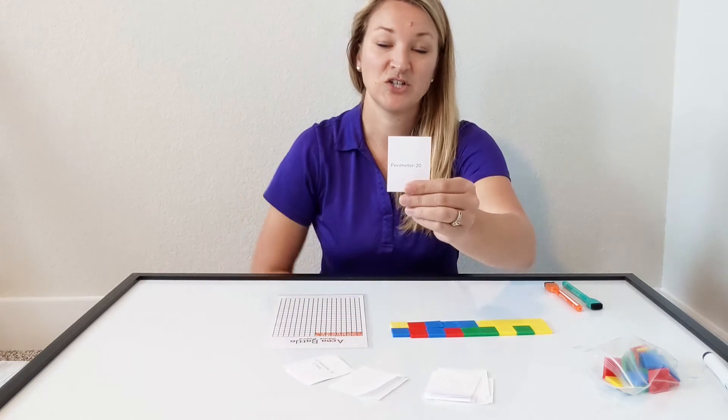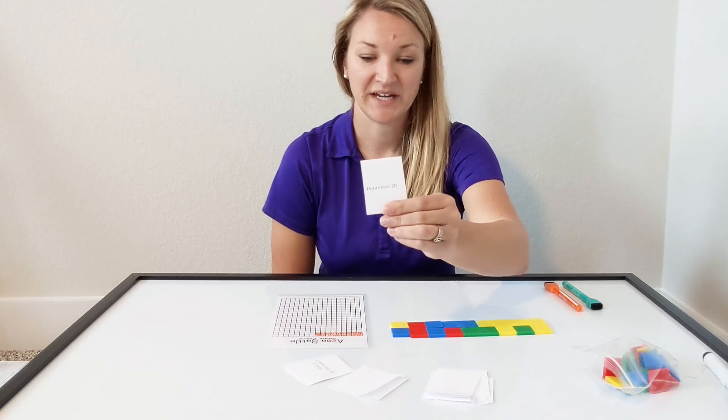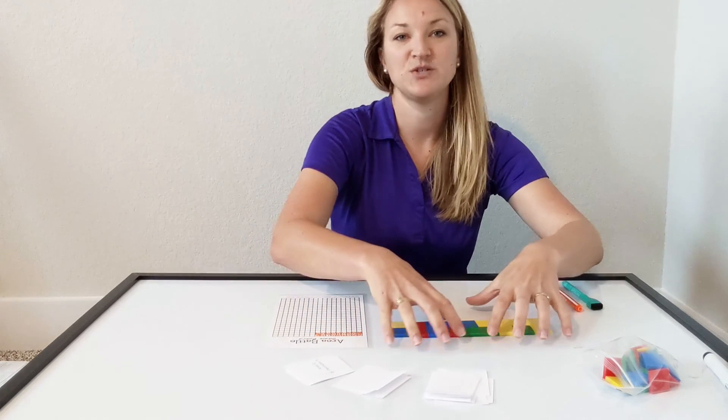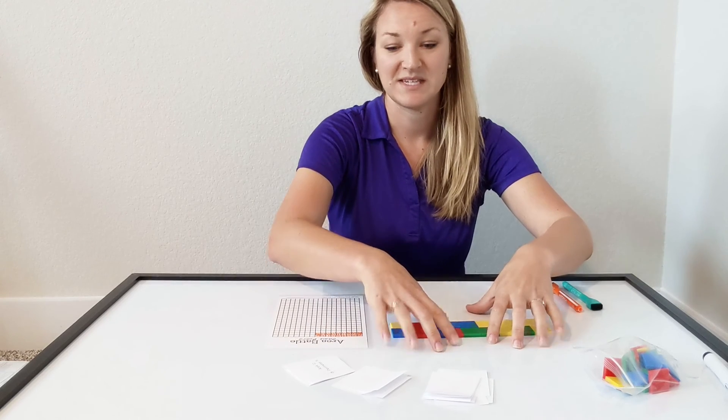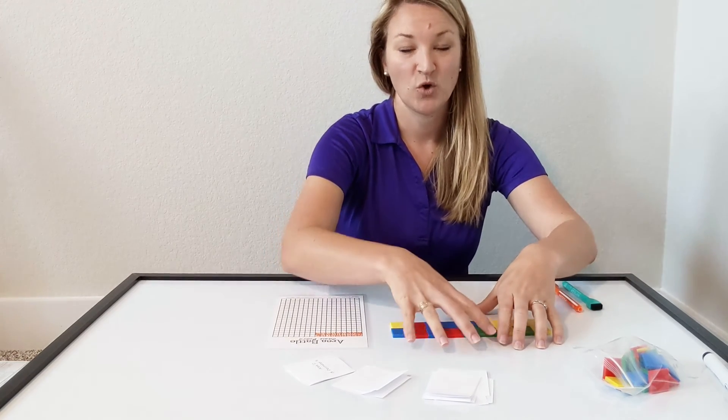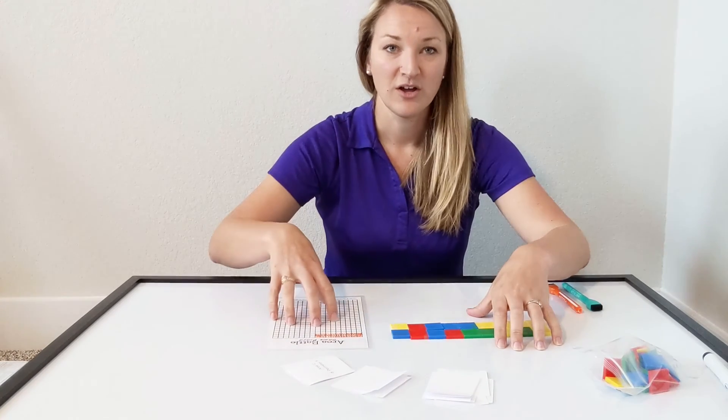One card says they're just given the perimeter of 20. So they have to figure out what arrangement of tiles creates a perimeter of 20 and then record the area of that figure on their game board.